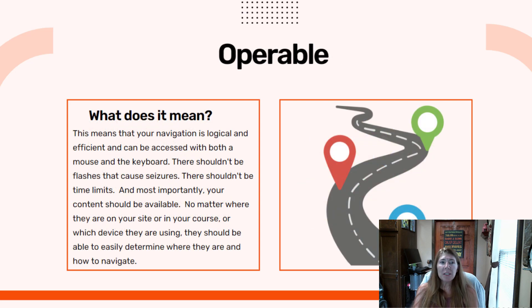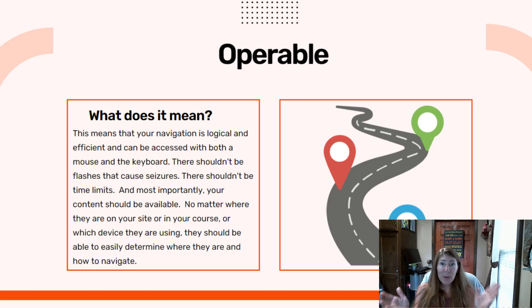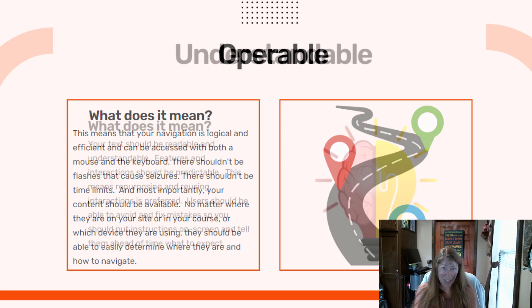Operable means that your course can be taken using a mouse or a keyboard. The navigation is logical. You don't have flashes or time limits. Your users should also be able to quickly determine where they are in your course — a menu is great for that.